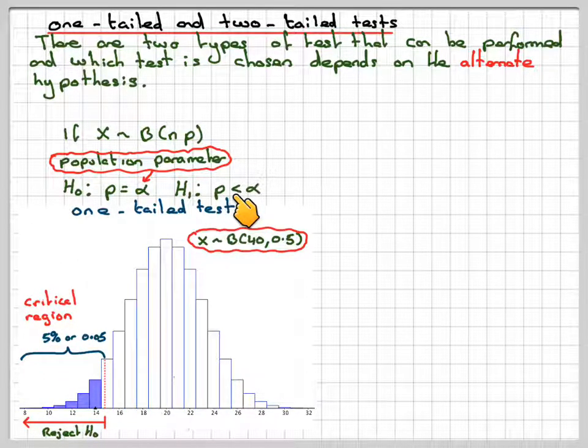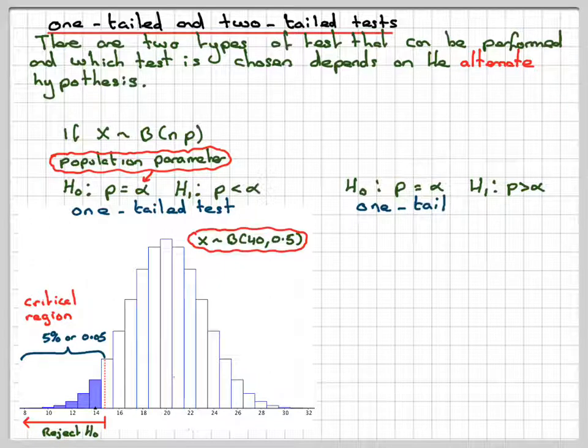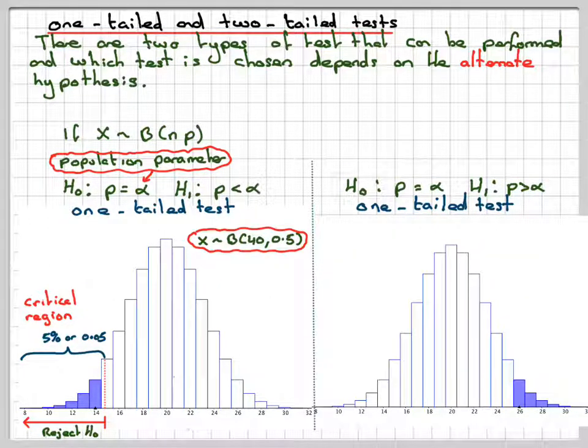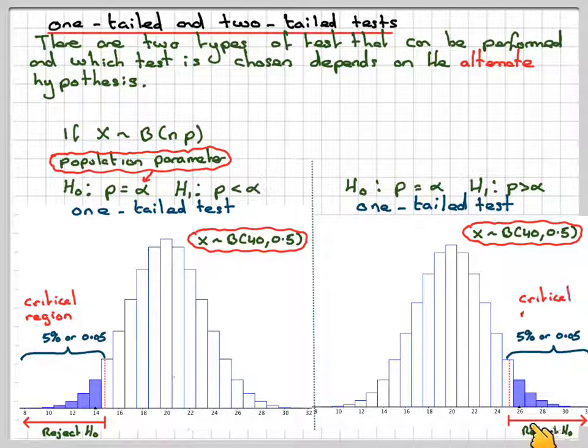If my alternative hypothesis was more than my particular value, so my particular value for alpha was 0.4, then I would be looking for a definite increase in this case. So I'll be looking in the upper tail, and that happens somewhere around in the 27th value. And you'll see how this works when we do some later videos.